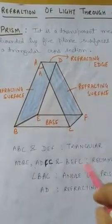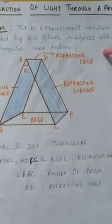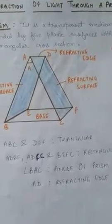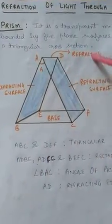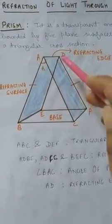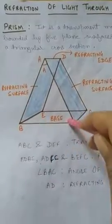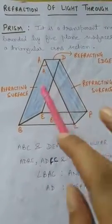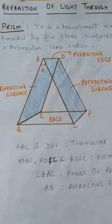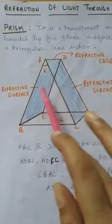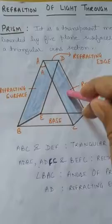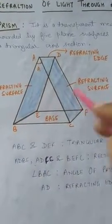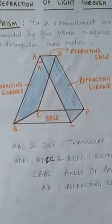A prism is a transparent medium bounded by five plane surfaces with a triangular cross section. As you can see, two surfaces are triangular and three surfaces are rectangular. These two rectangular surfaces are the surfaces on which refraction takes place, so they are known as the refracting surfaces.